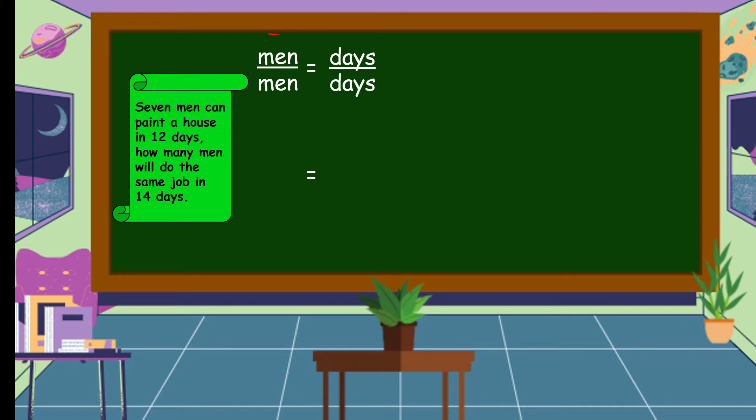We're going to write seven here and opposite to the other side is the number of days. How many men? We don't know yet. We're going to use a variable. We'll do the same job in 14 days.